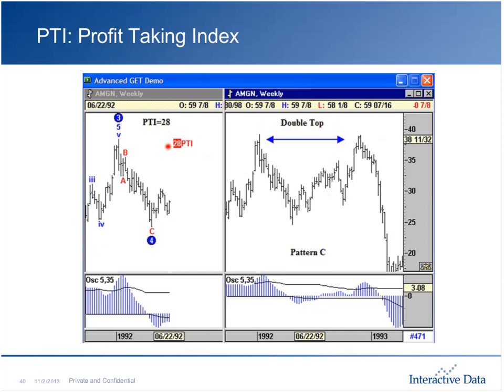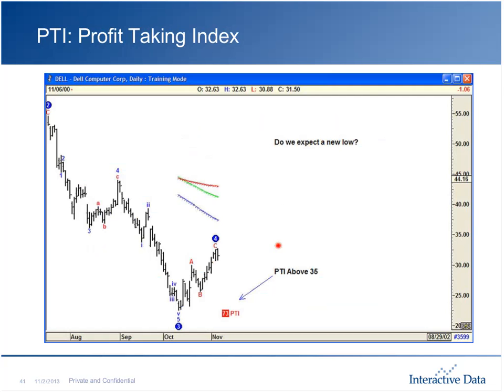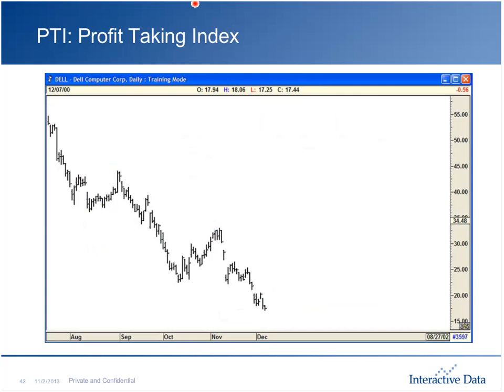Here's Dell on a daily chart. PTI at 73, well above 35. We've got that big wave three down, the wave four has moved up, PTI is above 35. Do we expect a new low? We did — we got that wave five continuation, that final move of the sequence. So far we have the waves, the oscillator helping identify the end of wave four, and the PTI ensuring profit-taking is happening in a premeditated way. But finally, we also have what are called the wave four channels.